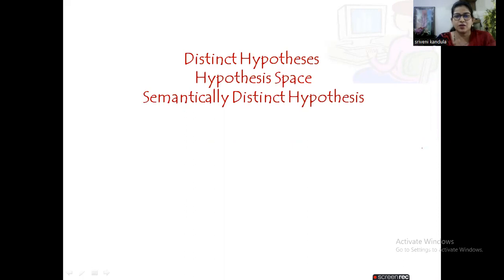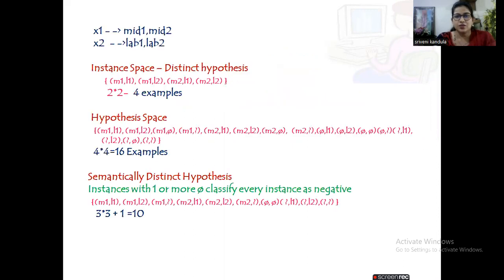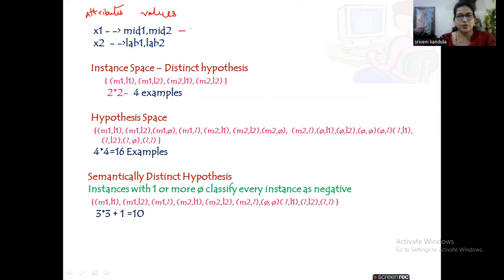Let us get into the concept. First of all, let us take a simple example. We are taking two instances x1 and x2. The values of these instances are: for x1 the values are mid1 and mid2 — these are our attributes and these are the values of the attributes. For x2 we take lab1 and lab2.